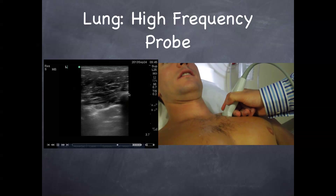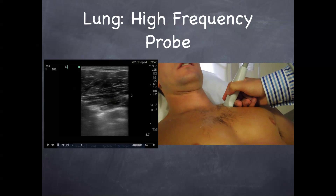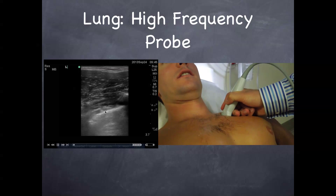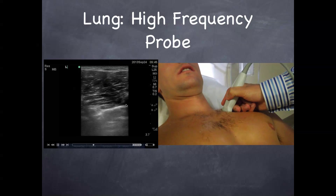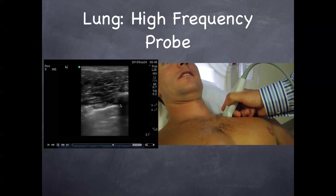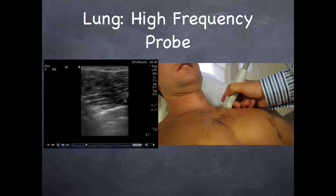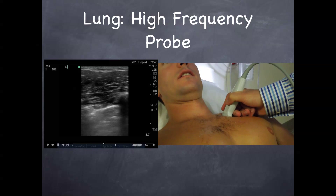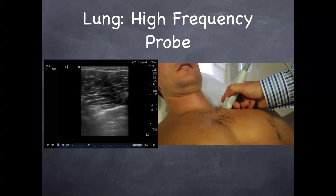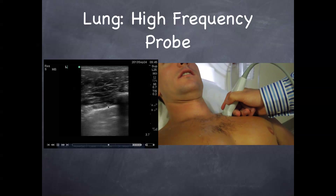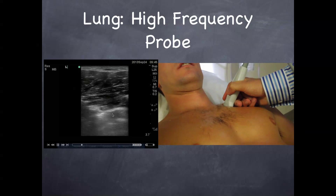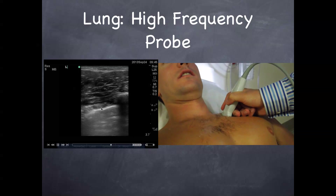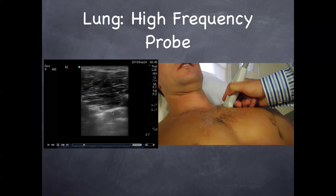On the left is the corresponding image with the ribs and rib shadows. They call this the bat sign — B-A-T — because it looks like a flying bat. Right away you can see they're sliding. You can do M mode if you want, but you don't necessarily need to. You can safely see the sliding here. One trick to improve this is to turn up your gain — it helps see the sliding of lungs.